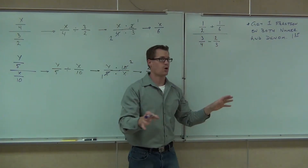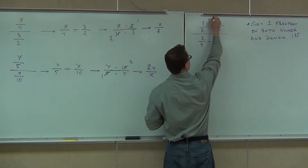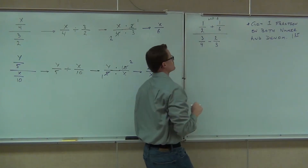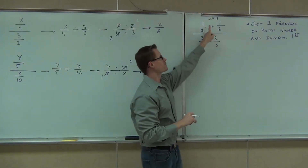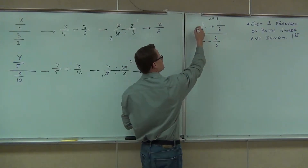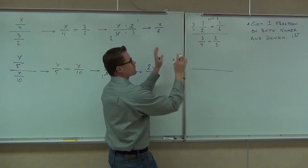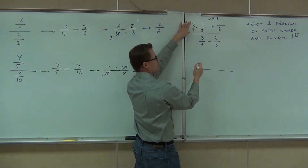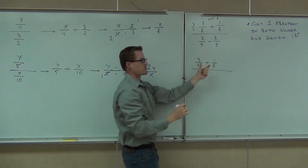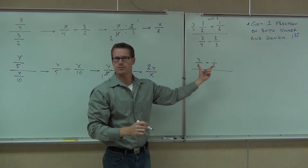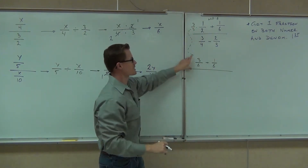Six. Good. We don't want to work too hard — we don't want to do 12, that's too much. LCD is six. Do I need to multiply the right fraction by anything? No. Do I need to multiply the left fraction by anything? Yes. By what? Three. So from our main numerator, I have three-sixths plus one-sixth. Do you see where those fractions are coming from? That's how we're getting this set of fractions.